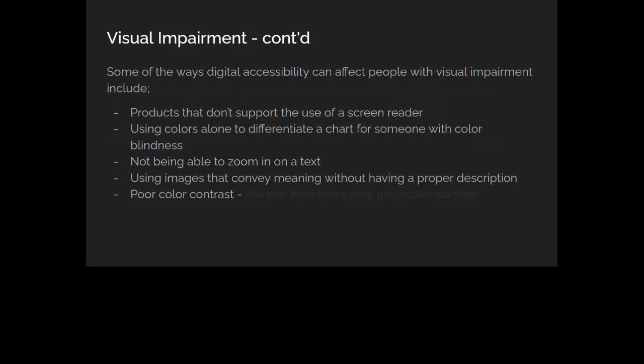There are several ways a poorly accessible site can affect people with visual impairment. The first is products that don't support screen readers. If you have a mobile app, website, or ebook that doesn't support a screen reader, that can severely affect people with visual impairment because they rely on screen readers to help them read text on screen. You can try a quick exercise: pick up your phone, close your eyes, try to type and send a message. You'll realize how inconvenient it is — but in reality, 253 million people have to live their lives that way.